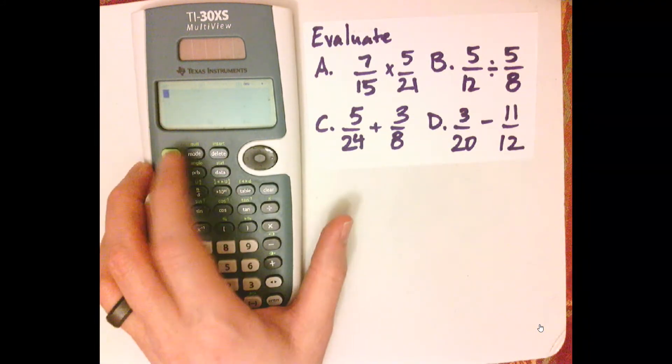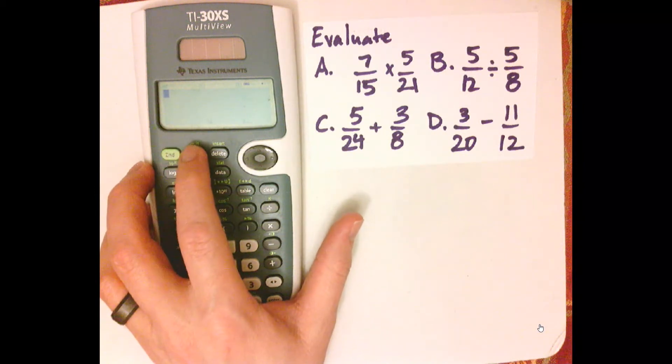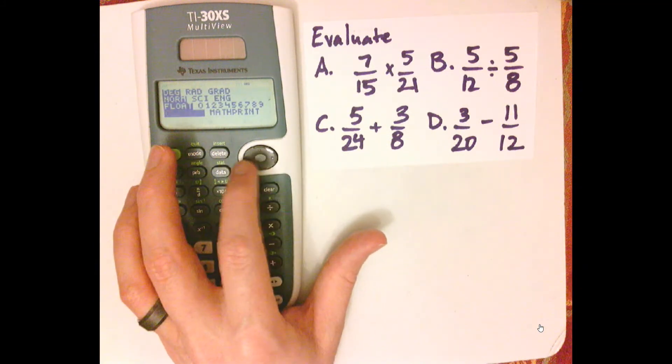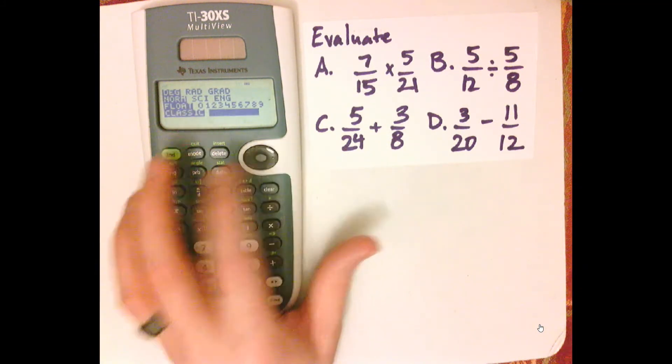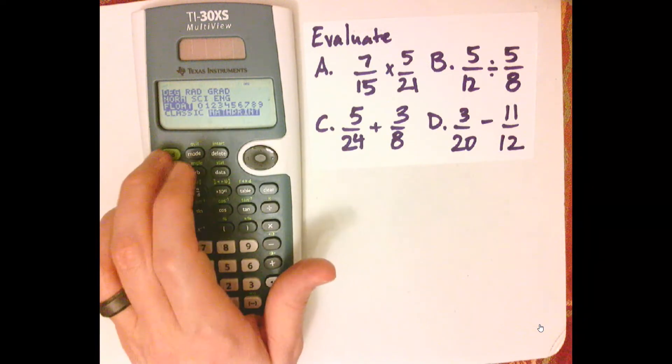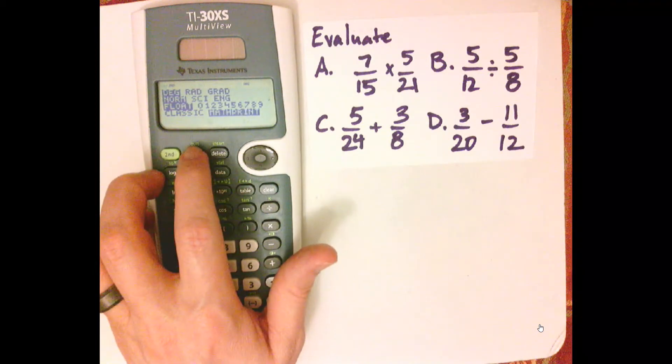First thing that you want to do is make sure that's on Math Print. That's going to make fractions look nice. So go to Mode, see it's on Classic, using the arrow keys to navigate, highlight Math Print, push Enter. Now it's in Math Print, now 2nd, and then hit Mode for Quit.